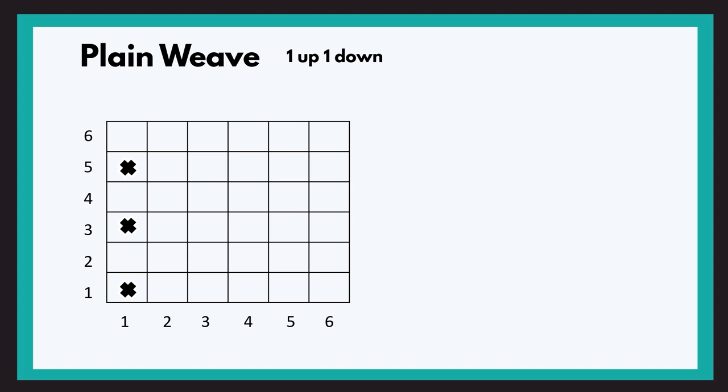For the second warp thread, since the first warp was lifted for the first pick, the second warp will be below — so we start with a blank, then cross, following one down one up. For the third warp the movement is the same as the first, and for the fourth warp it is the same as the second. The fifth and sixth warps also repeat the first and second warp movements respectively. This is how a plain weave is marked — this is the design of the fabric.